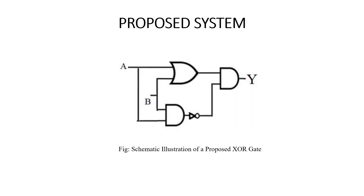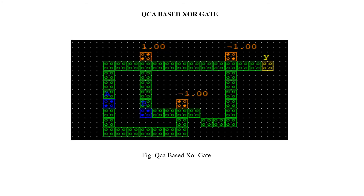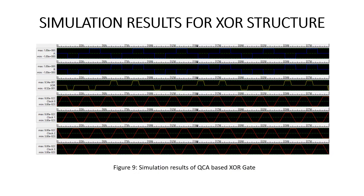Now we have proposed another logic. This is the proposed QCA logic — that is, the XOR gate. We have seen the simulation results showing how the XOR gate will act. As we already know: when two inputs are the same, the output will be zero; when two inputs are different, the output will be one.